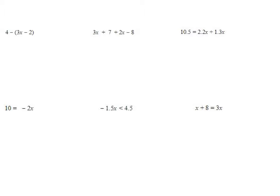Here I'm really distributing the minus, so this is just going to be 4 minus 3x. Now I'm subtracting a minus 2 — that's two negatives — so that gives me a positive 2. I can only combine the 4 and the 2 because they're like terms. The minus 3x is on its own. So 4 plus 2 is 6, and I have minus 3x, and we are done.